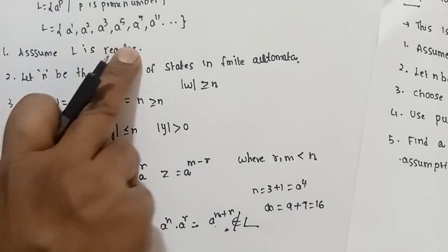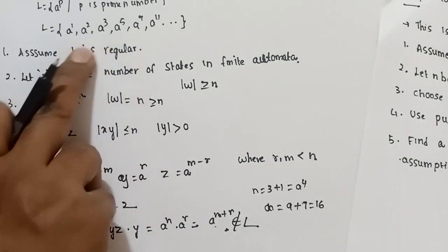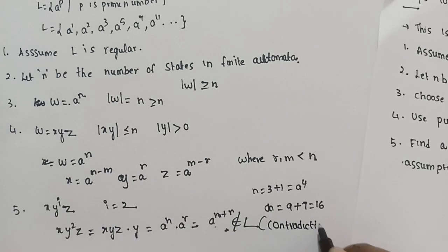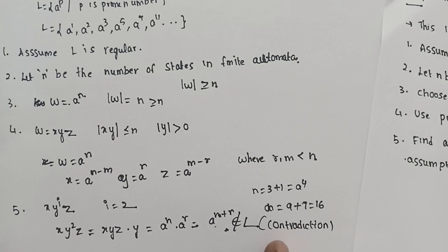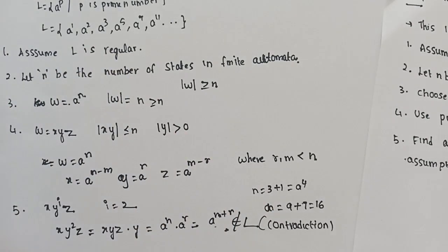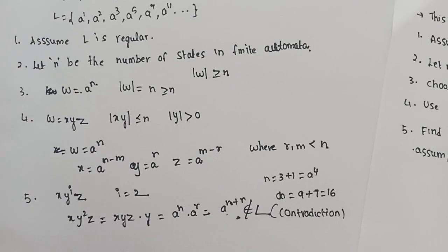This is a contradiction. According to the pumping lemma, when we pump the word, the resultant language should also belong to L. But this is a contradiction. Contradiction means our assumption was wrong. L is regular is wrong, so L is not regular.